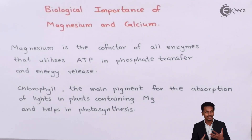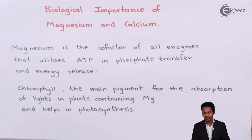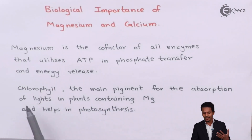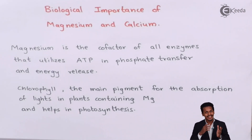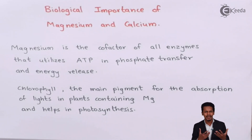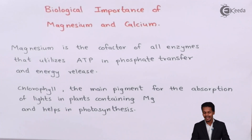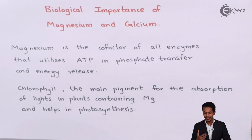That is the reason our body and all cells are able to function. Now talking about the next point: chlorophyll, which is the main pigment for the absorption of light in plants, contains magnesium and it helps in photosynthesis. Chlorophyll is the main cause of photosynthesis, and that is how we can consume plants and vegetables and get energy from them.